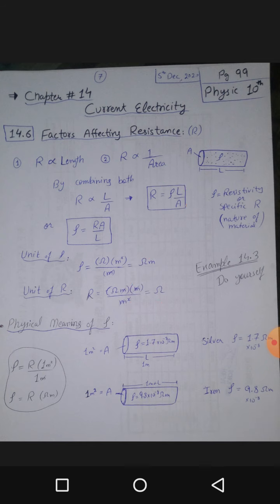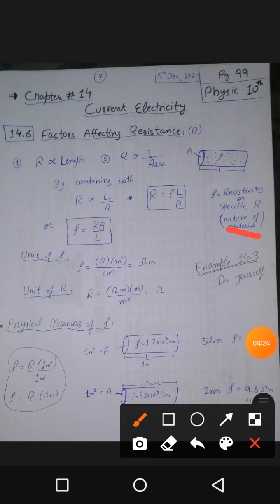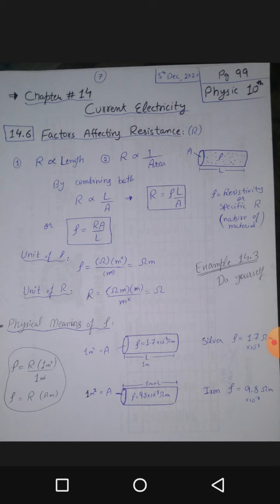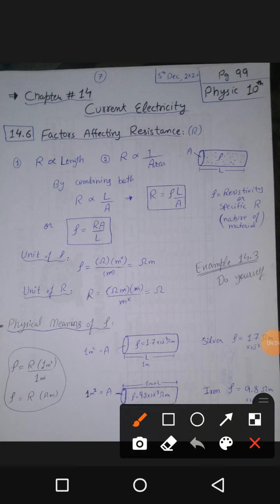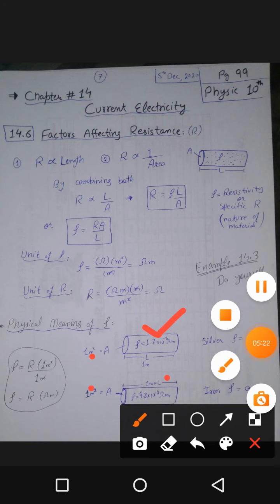Now let's look at the physical meaning of resistivity. Resistivity depends on the nature of the material — how many particles are present and how much density exists inside it, making it difficult for charge to flow. Taking a comparison of silver and iron: a one-meter wire of silver with cross-sectional area one meter square, and a one-meter wire of iron with cross-sectional area one meter square. Because silver's density is less than iron's, silver's resistivity will also be less than iron's.